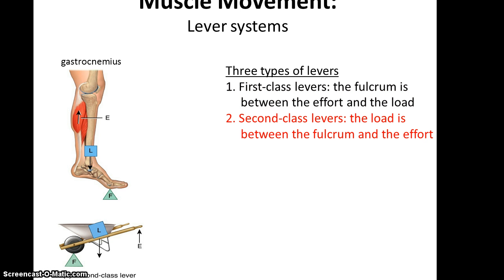In a second-class lever, the load is between the fulcrum and the effort. A classic example is the wheelbarrow, where the wheel is the fulcrum, the effort is where you lift up, and the weight of the load in the barrel is the load. An example in the human body is the gastrocnemius muscle in the lower leg — the fulcrum is the ball of the foot, the load is the tibia where the body's weight is, and the gastrocnemius muscle is where the effort is.